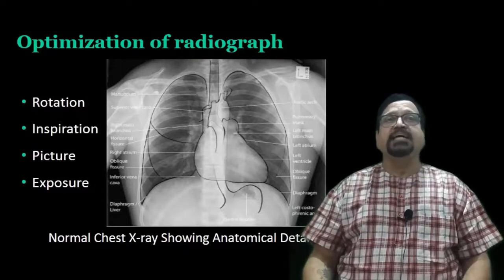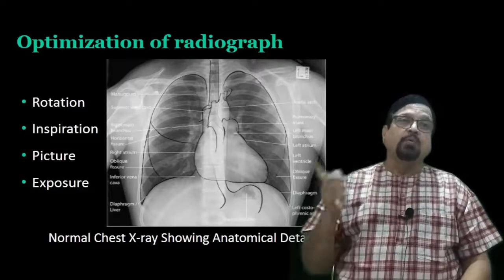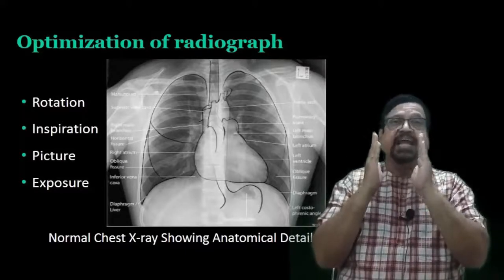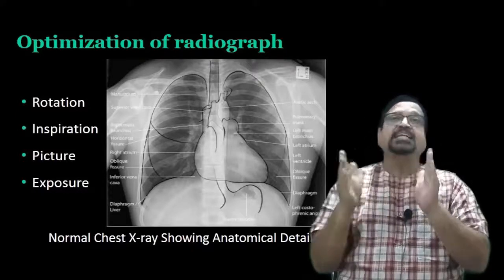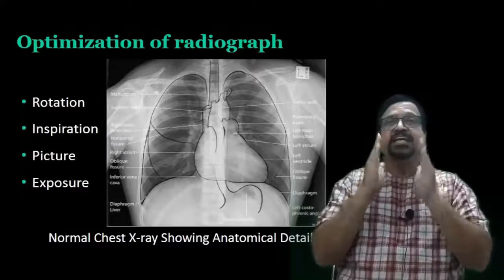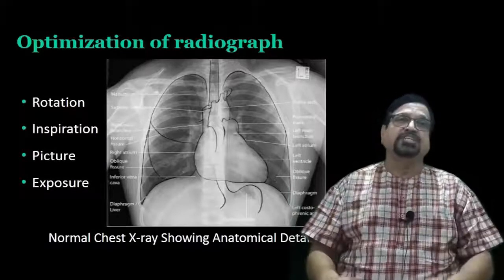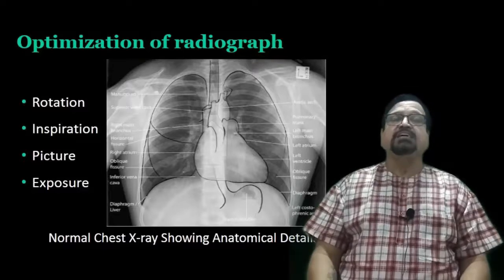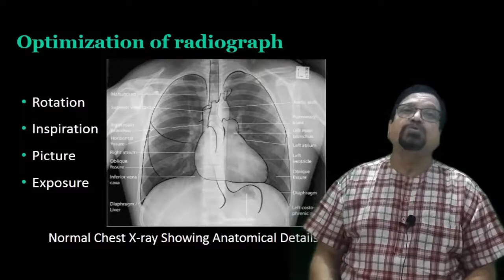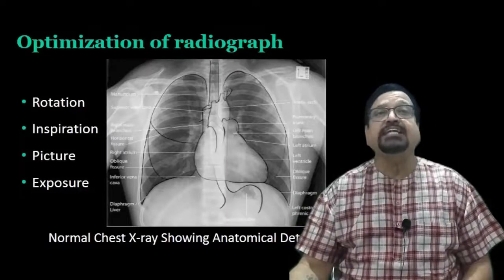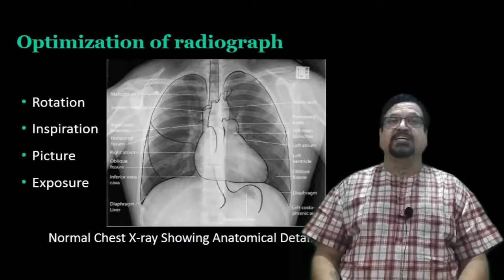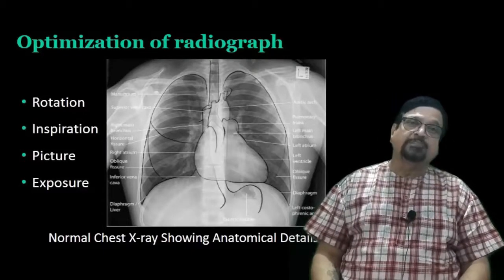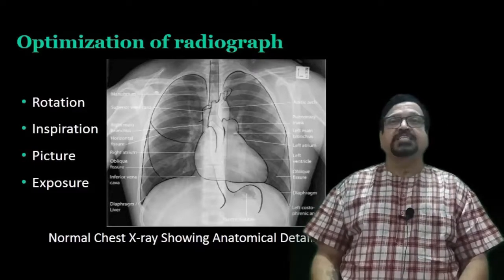Now how we have to optimize the X-ray. The X-ray can be optimized by ensuring there should not be any rotation. How we know rotation is by knowing the distance of the clavicle from the midline - the sternoclavicular end of either side should be symmetrically placed on either side of the trachea. Number two, there should be deep inspiration. The criteria are the ribs - you should see more than six ribs; eight ribs is a full inspiration. Then exposure factor is important for clarity. Cardiac borders should be sharp, vascular borders should be sharp - that means it is properly exposed. Exposure should be very short.